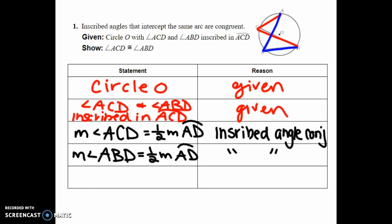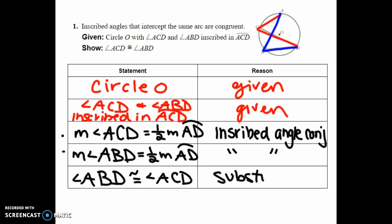Now, based on substitution — what we learned in algebra — if I substitute one of these for the other, I can say that angle ABD is congruent to angle ACD by substitution. That's the end of proof one. Notice these proofs are a little shorter and more to the point than what we've seen before.